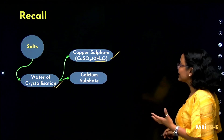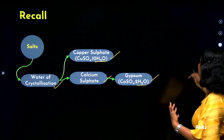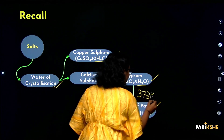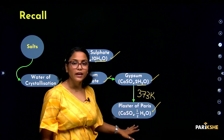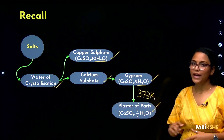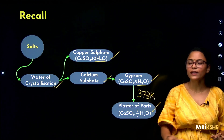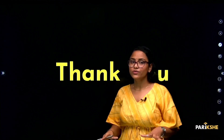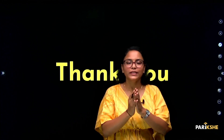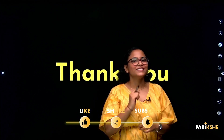Next, calcium sulphate: gypsum has 2 molecules of water. When heated to 373 Kelvin, gypsum forms Plaster of Paris — calcium sulphate hemihydrate. This is the end of our video. Thank you so much for joining us, and I will see you in the next video.